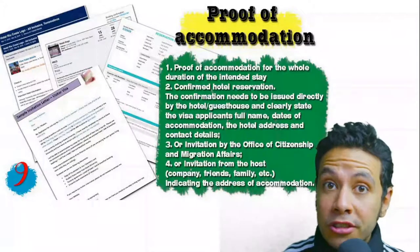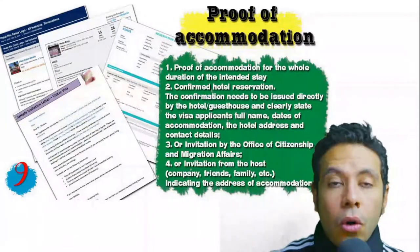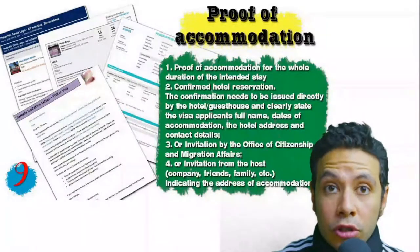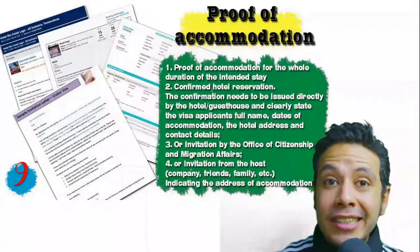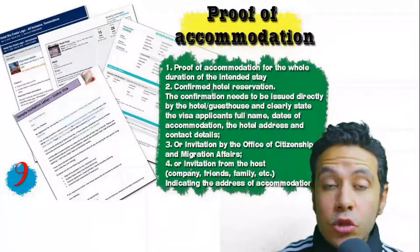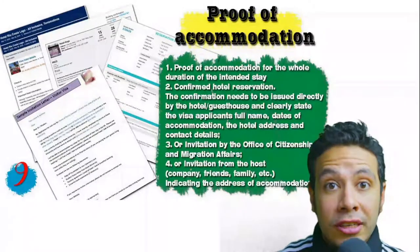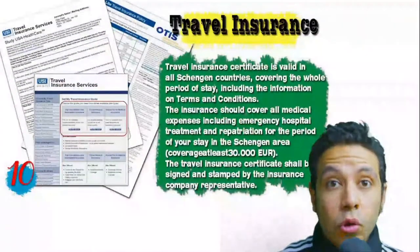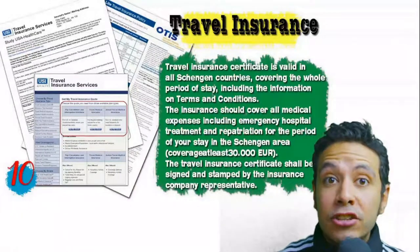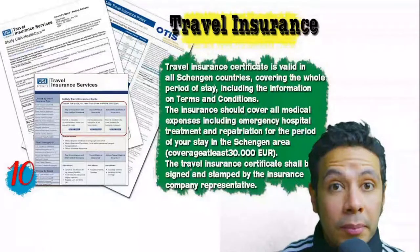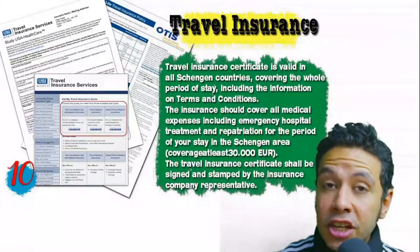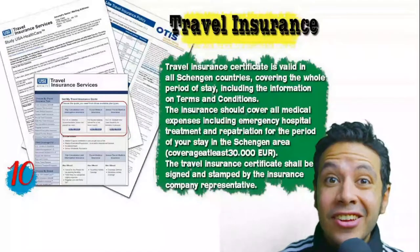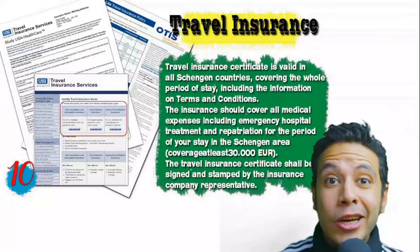Provide proof of accommodation: a confirmed or initial hotel reservation, or an invitation from a host or organization. The hotel name, address, and contact number must be mentioned. If invited by a person, the invitation letter should be mailed to the embassy or submitted by you with a copy of the inviting person's passport. Many countries, especially Schengen area countries, also require travel insurance with a coverage of at least 30,000 euros from an officially accepted provider.